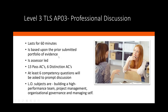The APO3 professional discussion lasts 60 minutes, is based around the prior submitted portfolio of evidence, is assessor-led, and has 13 ACs — although with considerable detail — plus distinction ACs. Assessors are briefed to ask six competency questions across a range of learning outcome subjects, then ask any additional questions necessary to score the ACs and allow the learner to give the best evidence they can for the maximum score.